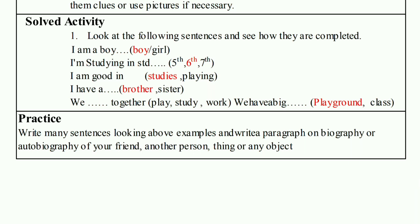For 'I am good in studies' — from the bracket, 'studies' or 'playing' — choose what applies. 'I have a dash brother/sister' — if you have a brother, write 'brother'; if you have a sister, write 'sister'. 'We dash together' — write what you do together: 'we play together,' 'we study together.' 'We have a big dash dash playground.'